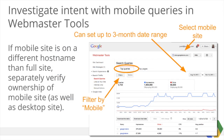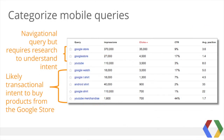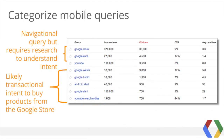Our understanding of mobile intent becomes more clear when we investigate web search queries in Google Webmaster Tools. Select your verified mobile site, navigate to search queries, and within top queries select a date range of up to three months. With filters, we'll look at only the searches from mobile phones. To make sense of the data, as we discussed earlier, we may want to categorize queries.